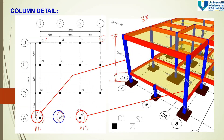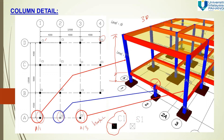S1 is the stump, which stops at ground level. You can see the difference between C1 and S1 symbols. For C1, you have a full hatch. For S1, you have a square shape with an X cross, meaning this stump is stopped here — at the ground floor level.